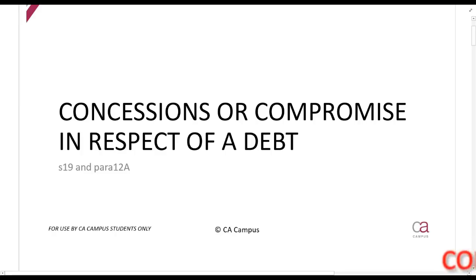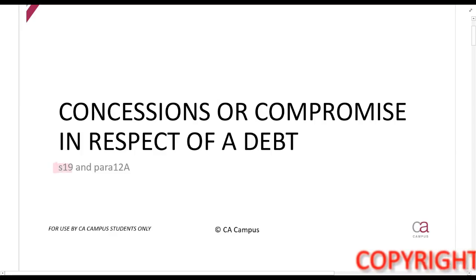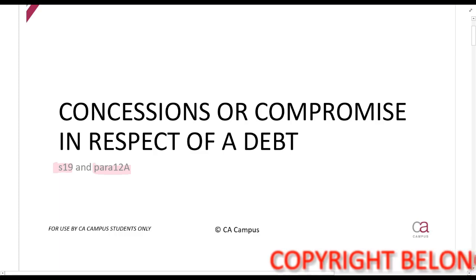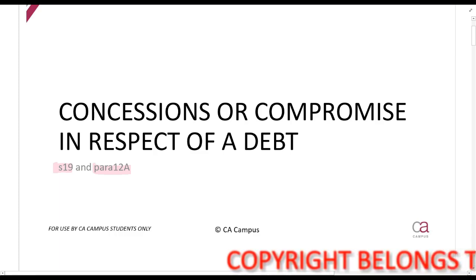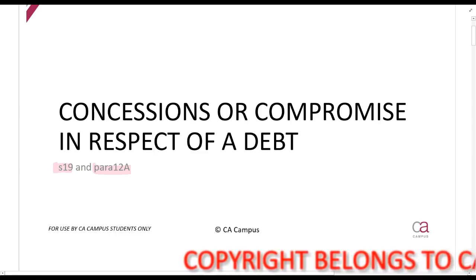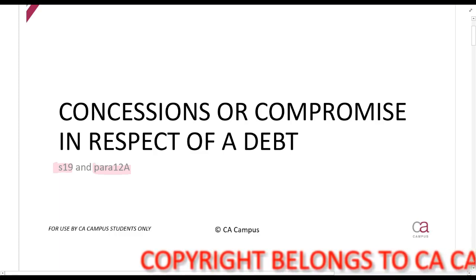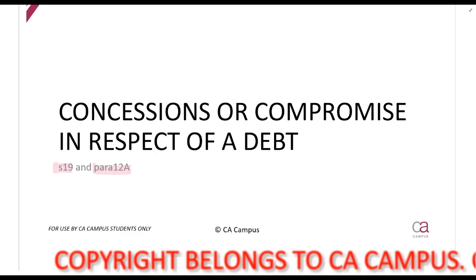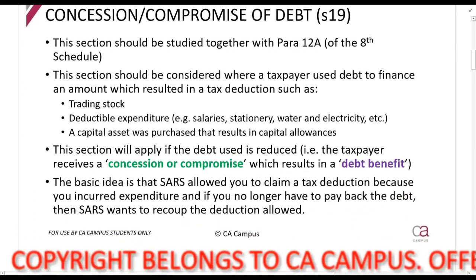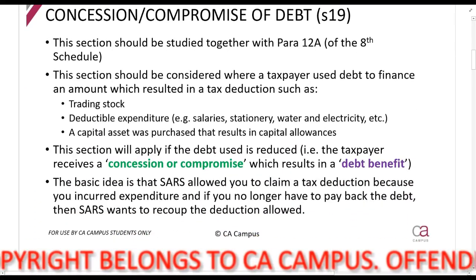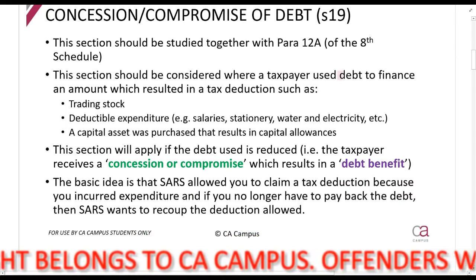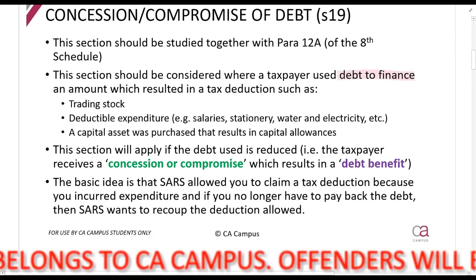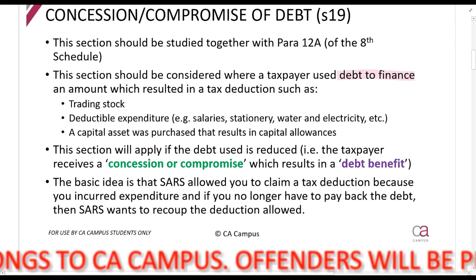We are now going to talk about the concession or compromise in respect of a debt, which is discussed in section 19 and paragraph 12A. Paragraph 12A you studied when you did capital gains tax — that covered the CGT side of this problem. Section 19 deals with the recoupment or income tax side of it. This section relates to a situation where you used a debt to finance an amount which resulted in some sort of tax deduction.